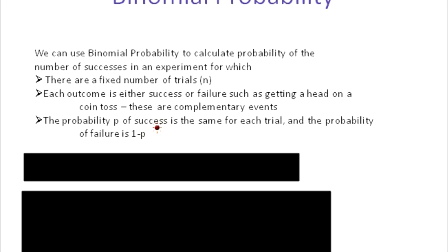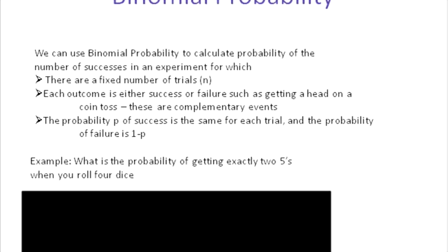The probability of success P is the same for each trial. Tossing a coin, every time the probability is one-half. Rolling a die, every time the probability of getting a six is one over six. And then the probability of failing would be one minus P. The probability of getting a head is one-half, so the probability of getting a tail must be one minus that — one minus a half is a half.